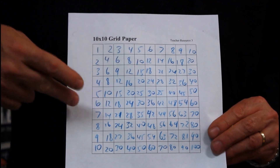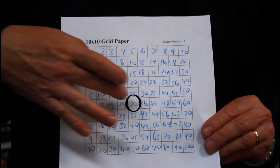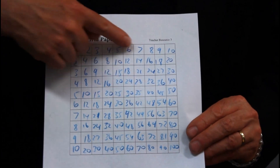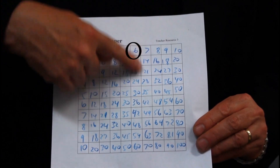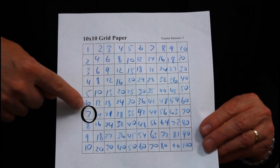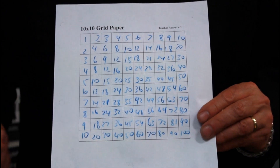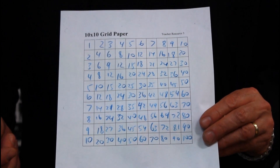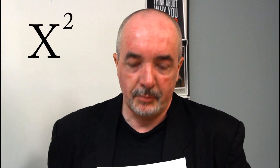Of course you can do multiplication. Suppose you want to do 5 times 6 — you find a 5, you find a 6, join them up and you get 30. You can also do division. Suppose you want to do 42 divided by 6: you find your 6 line, go down to hit 42, move across to the side and you get 7. So 42 divided by 6 is 7.